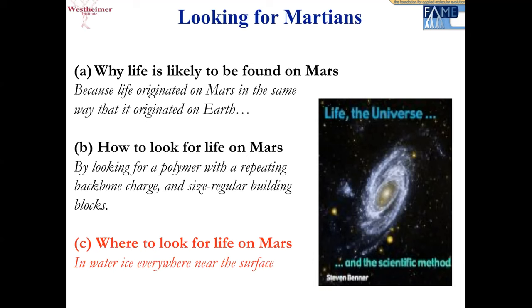NASA will not ever build an Agnostic Life Finder. This has been known to NASA for 20 years. There have been proposals, but NASA prefers to fly drones above Mars. NASA has known how to look for life on Mars, where to look, and why it's likely — for 20 years — and still has not built one of these instruments.